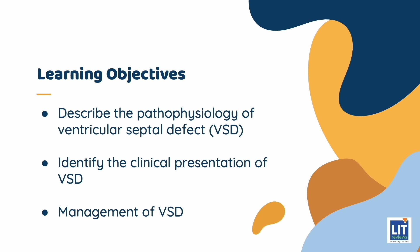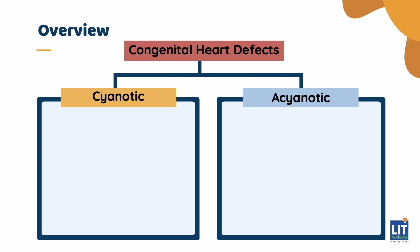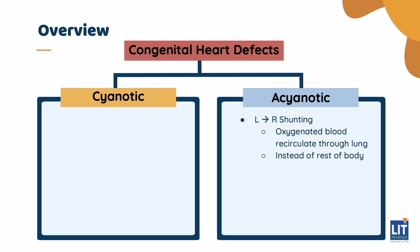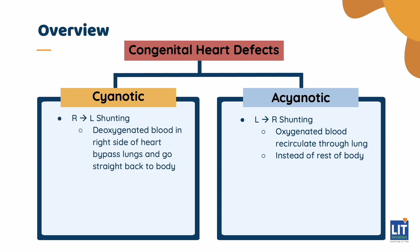Let's start with a general overview of congenital heart defects, categorizing them into acyanotic vs cyanotic conditions. Acyanotic conditions have left-to-right shunting, causing oxygenated blood to recirculate through the lungs instead of circulating to the rest of the body. Cyanotic conditions, on the other hand, have right-to-left shunting, causing deoxygenated blood to bypass the lungs and go straight back into the body without picking up oxygen.